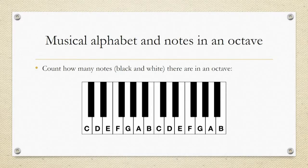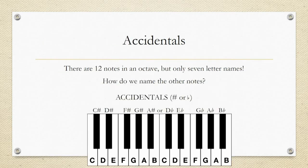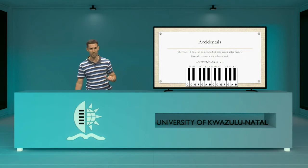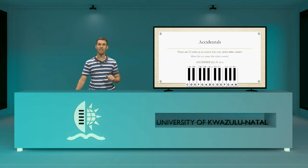This is where we come to something called accidentals. It's important to remember that in English when we speak about something being accidental it was a mistake, but in music this isn't the case. An accidental is simply a name that we give to notes that have no particular name. So let's see — how do we name the black notes in between?